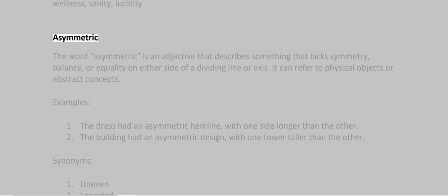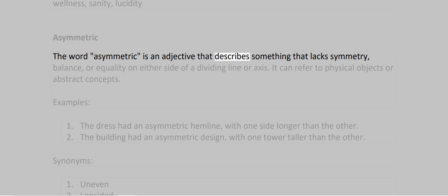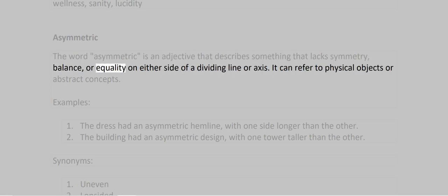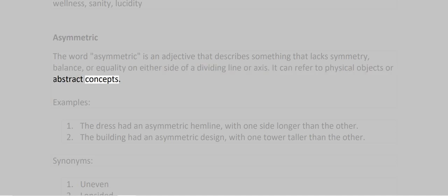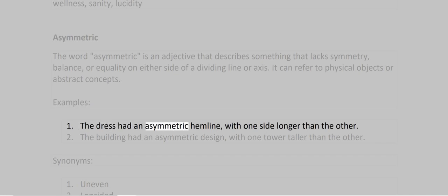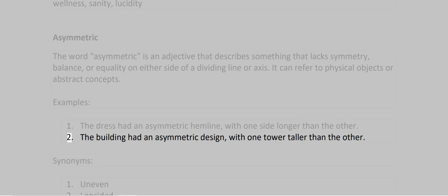Asymmetric. The word asymmetric is an adjective that describes something that lacks symmetry, balance, or equality on either side of a dividing line or axis. It can refer to physical objects or abstract concepts. Examples: 1. The dress had an asymmetric hemline with one side longer than the other. 2. The building had an asymmetric design with one tower taller than the other.